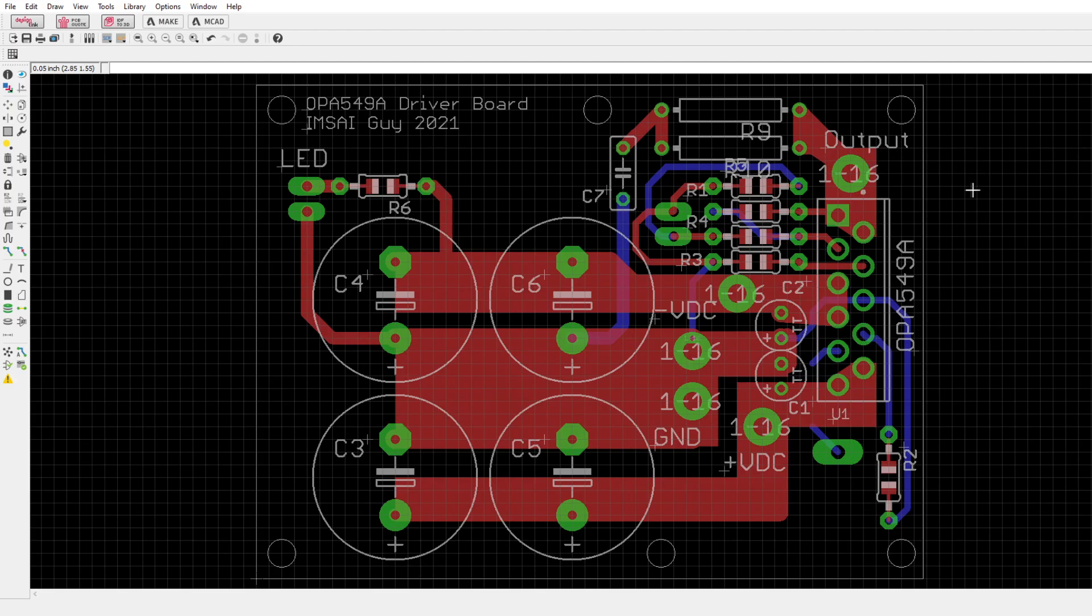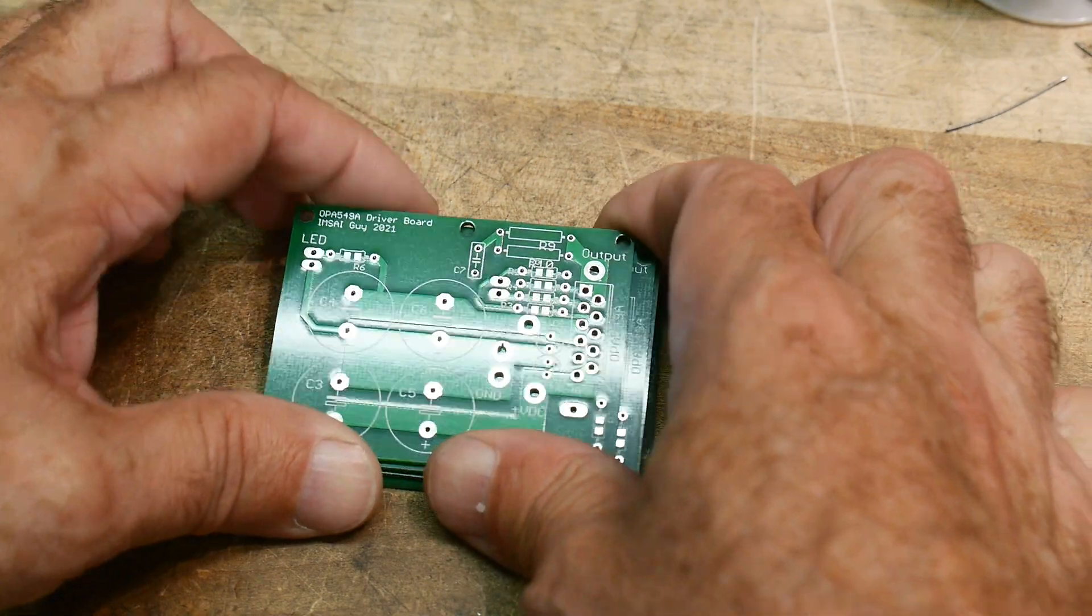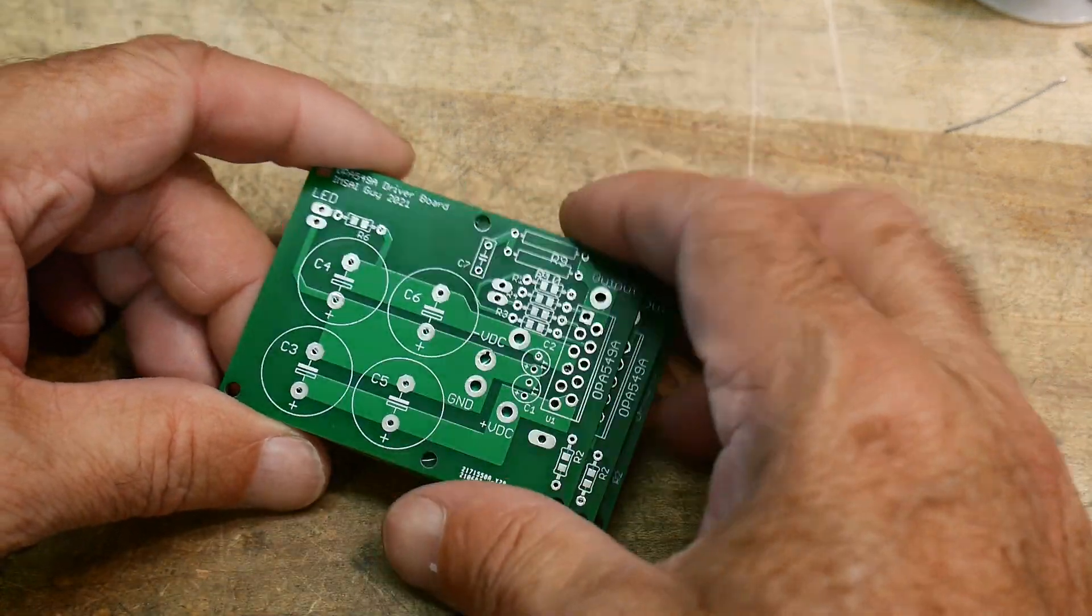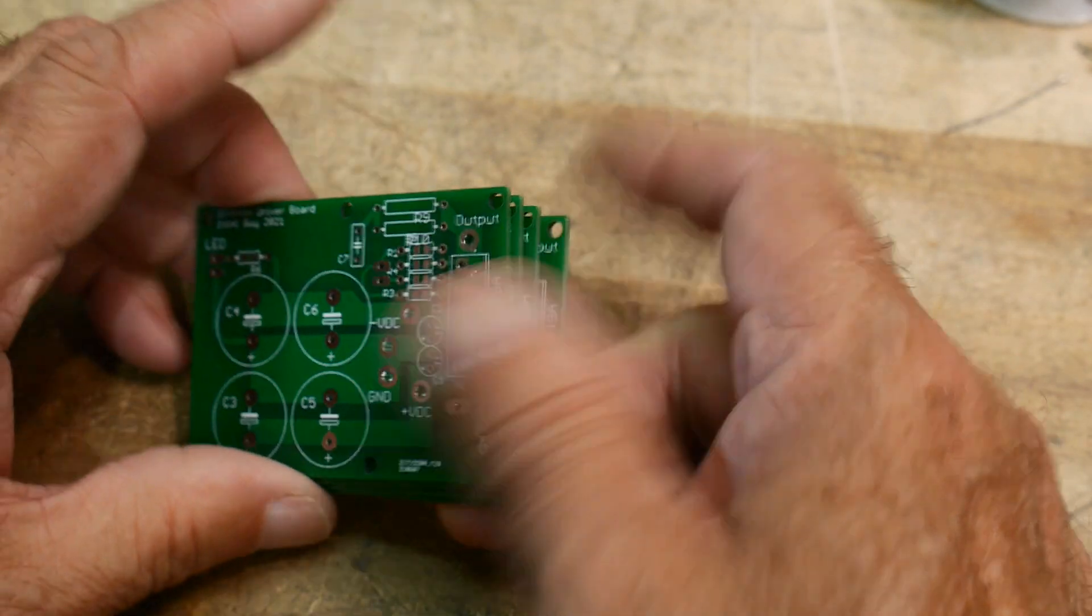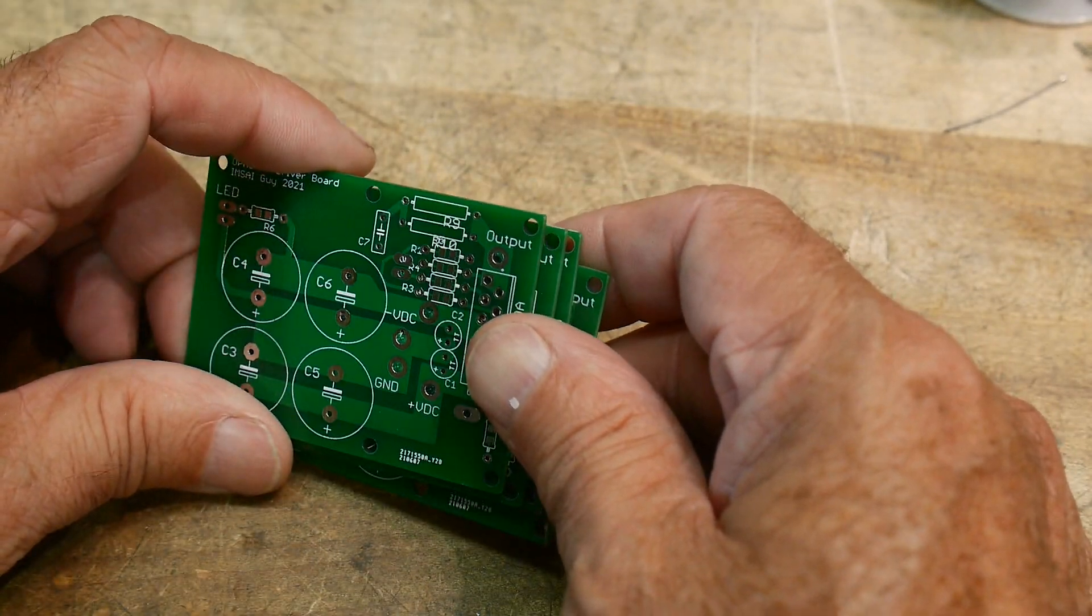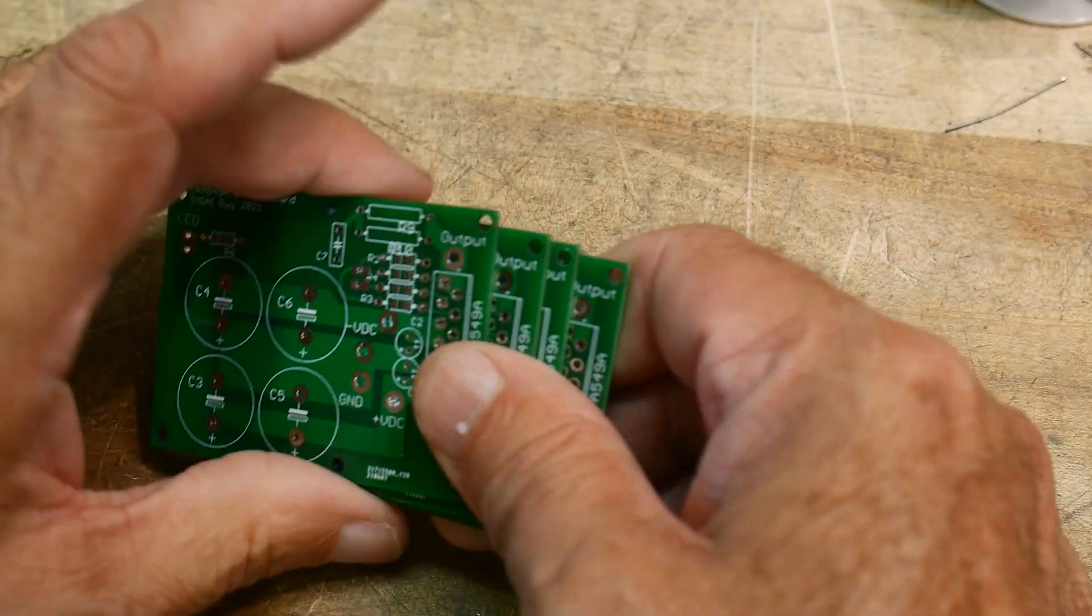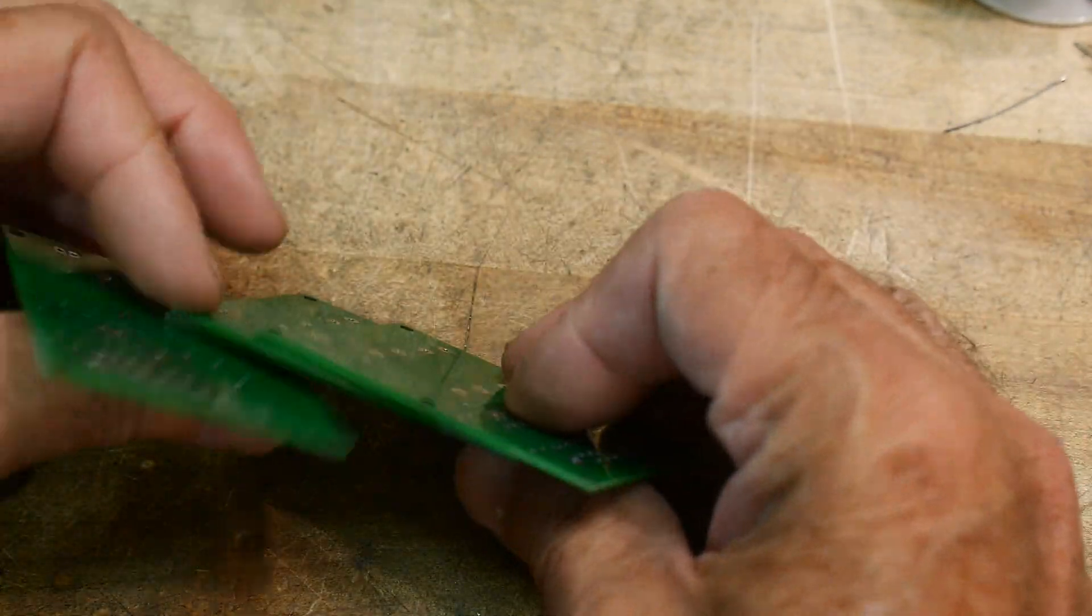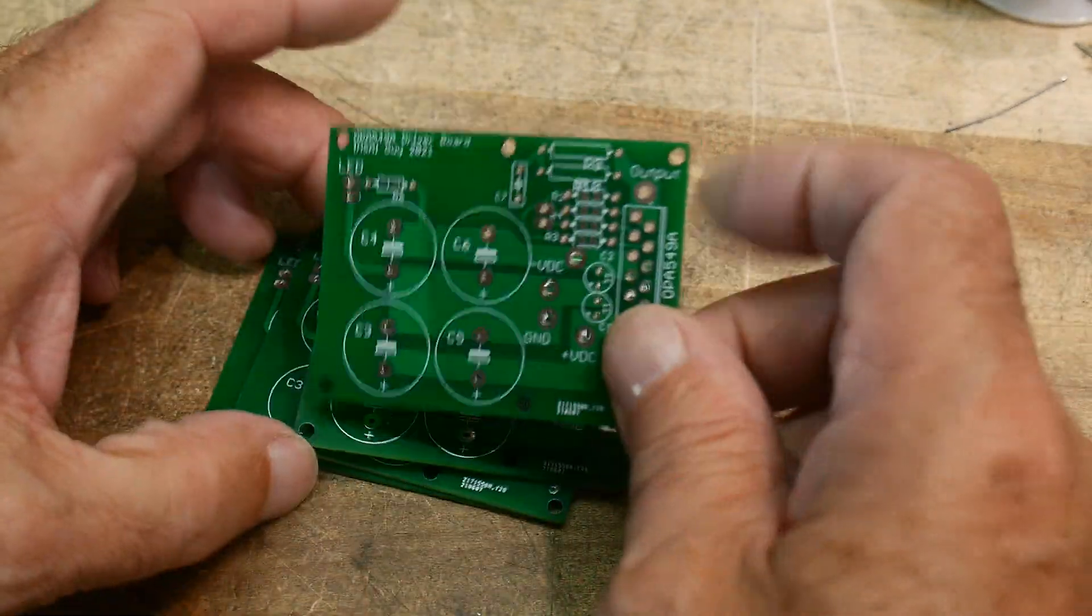All right, it's been eight days and I now have PC boards in my hand. I can't believe it, eight days. I paid two dollars to get five boards and it was eleven dollars and eighty cents total, so nine dollars and eighty cents shipping. Yeah, less than twelve dollars, eight days later I've got PC boards in my hand and they're beautiful.